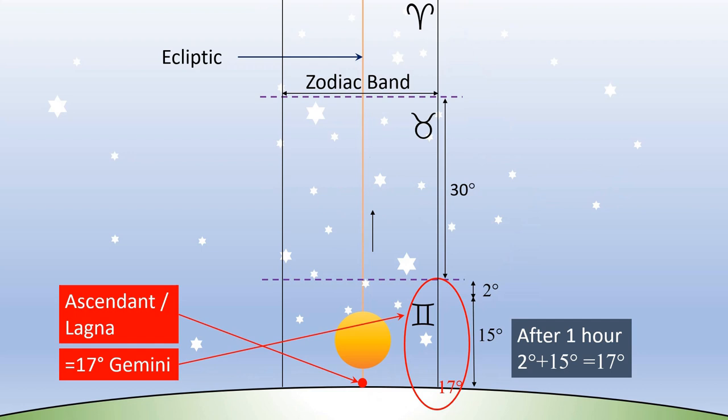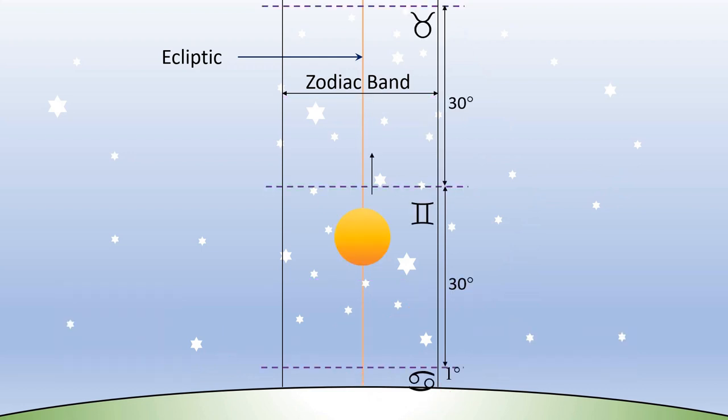And in another one hour, lagna will progress another 15 degrees and will be at 2 degrees of Cancer, which is the next sign that would have risen after Gemini, as shown on the screen.